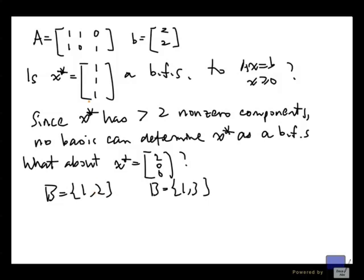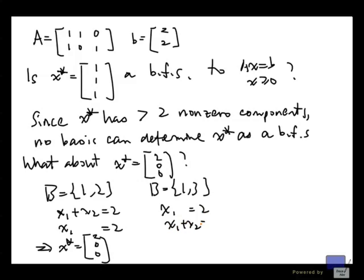When B equal to {1, 2}, you first set x3 equal to 0 and solve. When x3 is equal to 0 and you solve the system, the system that you're looking at is x1 plus x2 equal to 2 and x1 equal to 2, and that gives you the solution determined by B is [2, 0, 0]. Now if B is {1, 3}, then you are setting x2 to 0. And so, you are looking at x1 equal to 2 and x1 plus x3 equal to 2, and again, if you solve this, you get the basic feasible solution [2, 0, 0].